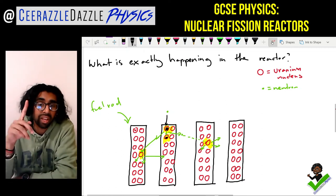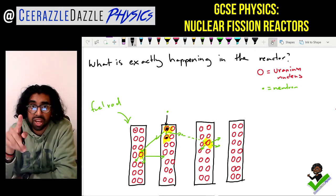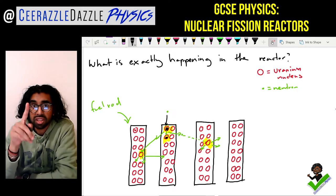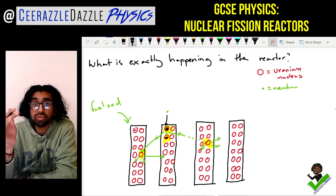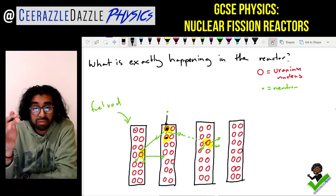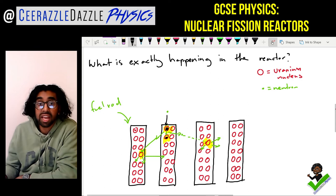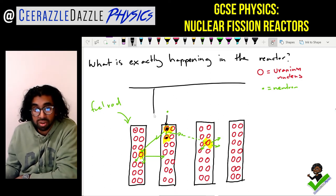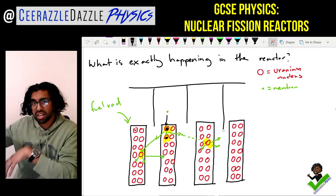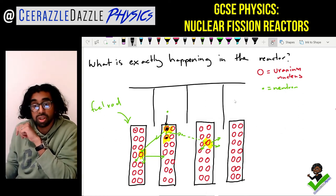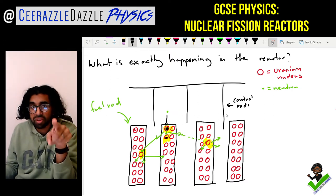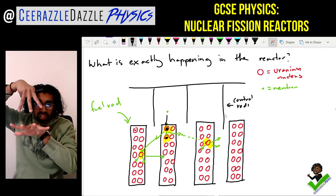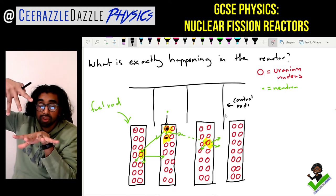So we've got our fission reactions occurring - now loads of reactions are occurring. In the nuclear reactor we may need to control the rate of the reaction. The key thing is this: if the reaction is occurring at a rapid rate there might be too much energy being produced, so we need to reduce the rate of the reaction. What they have in a nuclear reactor are these giant rods - these are going to be called the control rods.